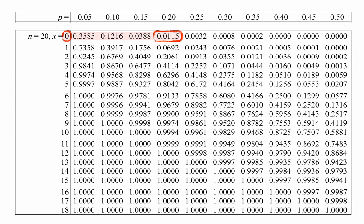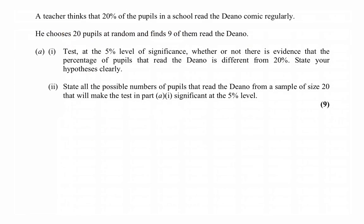Then we scan up the same column, stopping before crossing 0.975. We get up to 0.9900, which is the probability of getting 8 or less. So 1 minus that is the probability of getting 9 or more, meaning the other end of the critical region is 9, 10, 11, 12, and so on up to 20. The numbers that would cause us to reject the null hypothesis are 0 together with the numbers 9 through 20.